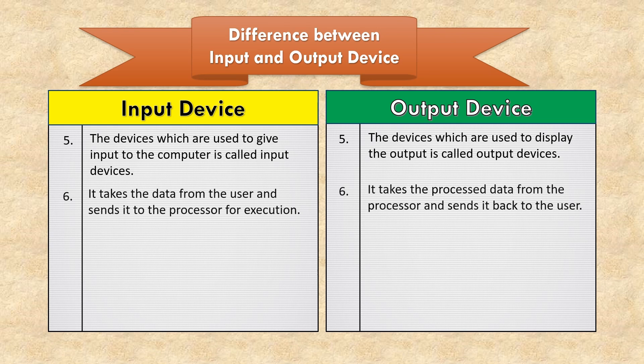Input device takes the data from the user and sends it to the processor for execution. Output device takes the processed data from the processor and sends it back to the user.